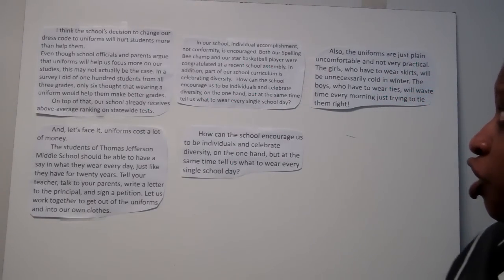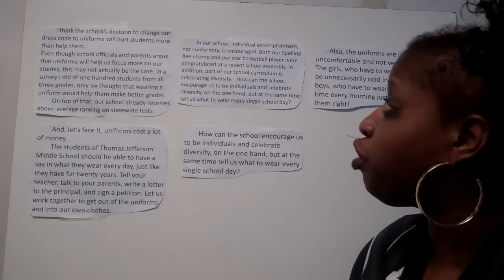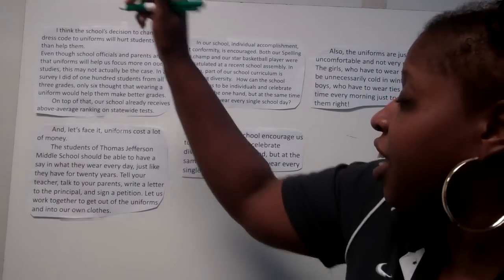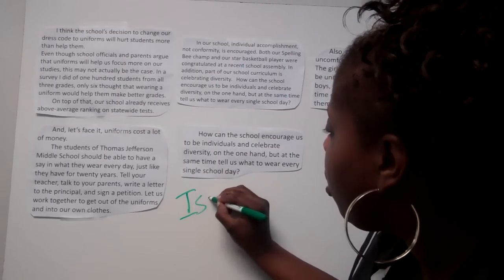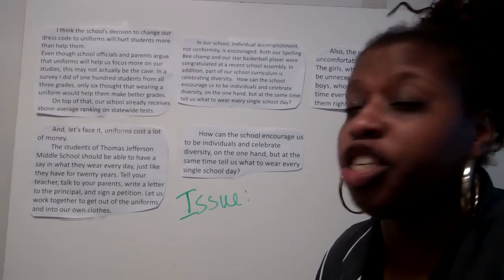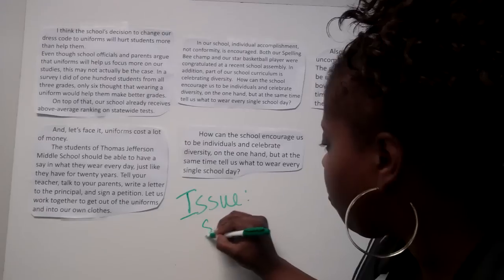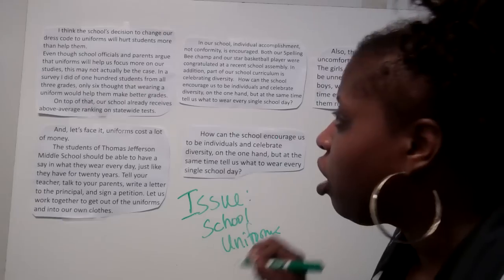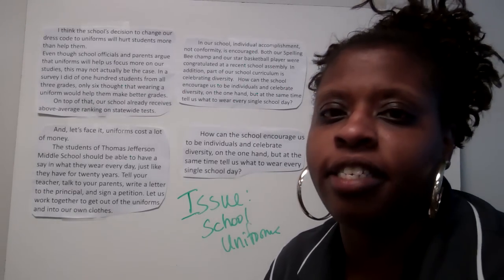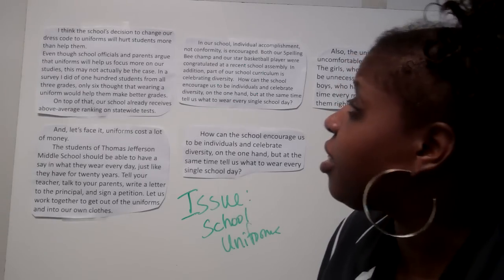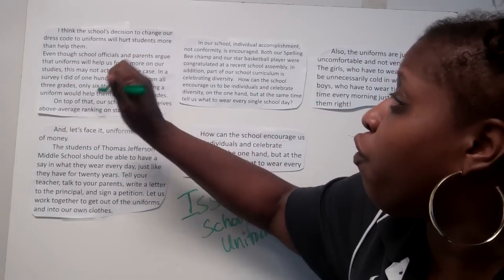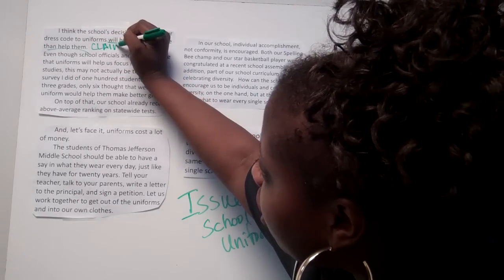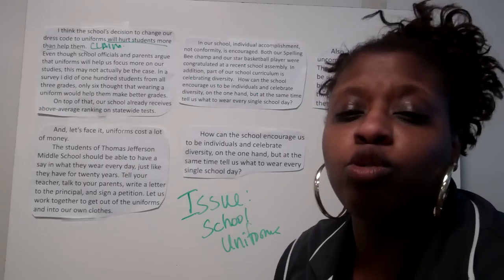The example reads: 'I think the school's decision to change our dress code to uniforms will hurt students more than help them.' Let's stop right there. Automatically, we see the issue: the school is deciding to change the dress code to uniforms — so our issue is school uniforms. The claim or argument the author is making is right there in the first sentence: uniforms will hurt students more than help them. Now they've got to give us reasons why.